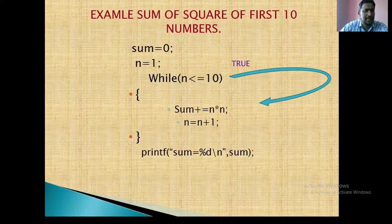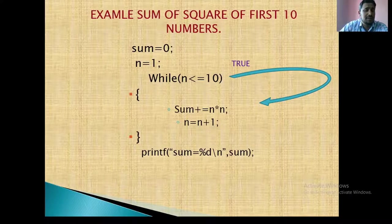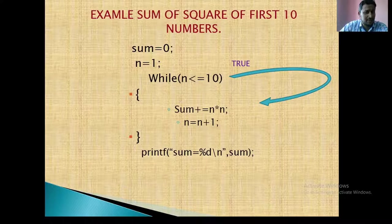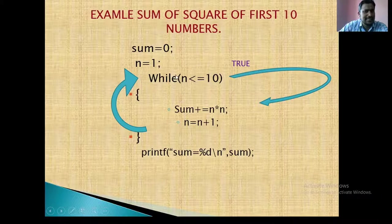So sum is first sum is 0. Here sum equal to sum plus 1 star 1. That is sum is 1. And n is 2. Then it is written back to the condition.